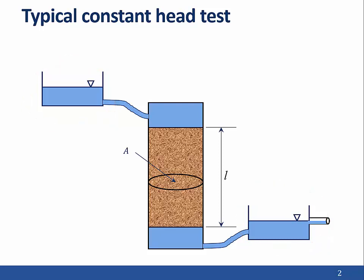The change in head across the sample, delta H, is the difference in the elevation of the water surface in the upper and lower reservoirs. If we maintain a constant delta H, the flow out of the lower reservoir, Q, will be equal to the flow of water through the sample. We can measure Q by measuring the time it takes for the flow to fill up a container of a known volume.